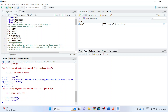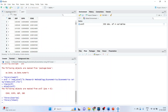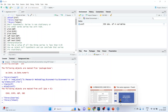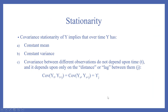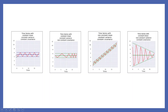Now we will check the stationarity of the variables GDP, export and consumption. Covariance stationarity of Y implies that over time Y has constant mean, constant variance, and covariance between different observations does not depend on time T — it depends only on the distance or lag J. In the first plot, the mean is constant (the dark blue line), variance is constant (shown by the dotted lines), and covariance is constant (the dark red lines are equally spaced). So this series is stationary.